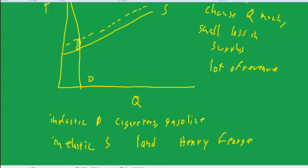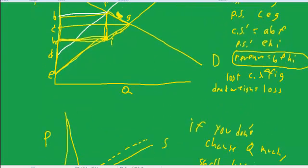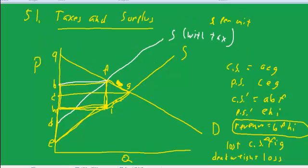So you get your tax revenue without the loss of consumers and producers surplus, but more generally, it doesn't work that way, and we do get these losses, like this triangle of FIG in the example, and so that's it on taxes and surplus.